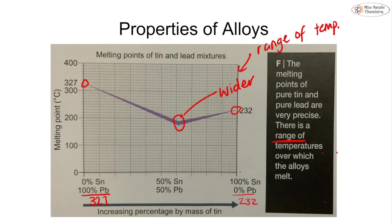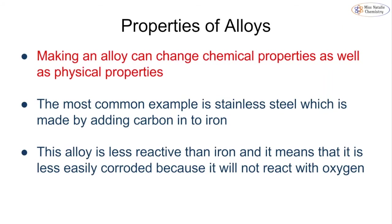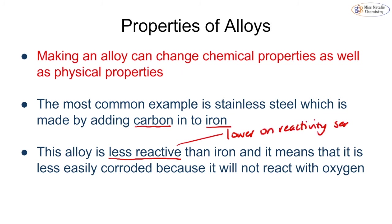Making an alloy can not only change physical properties but also chemical properties. The most common example is stainless steel, formed by adding carbon into iron — it only takes very small amounts of carbon. Once this stainless steel alloy is formed, it is less reactive, meaning it would sit lower on the reactivity series. Since the least reactive metals are at the bottom, being lower means it is less easily corroded because it does not react with the oxygen in our atmosphere.